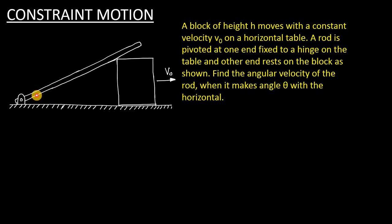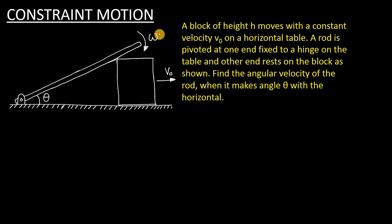As you can see, the rod will make angle theta with the horizontal like this, and the block is moving with velocity v0. As the block moves rightwards, the end touching the rod causes the rod to come down. So the rod is rotating clockwise — omega is the angular velocity, and this angular velocity is related to angle theta, because as theta decreases the rod gets angular velocity.